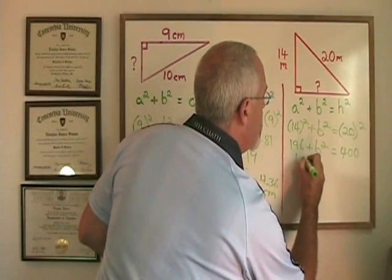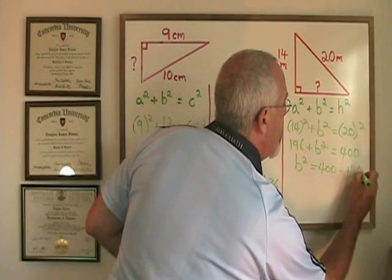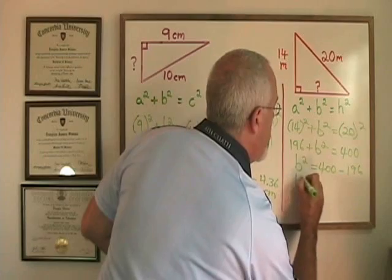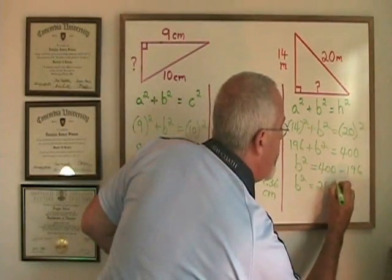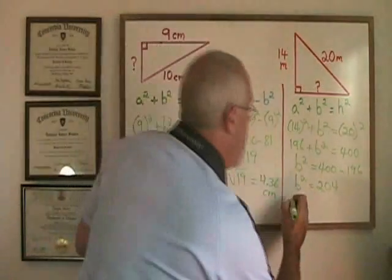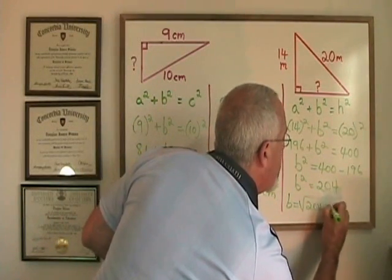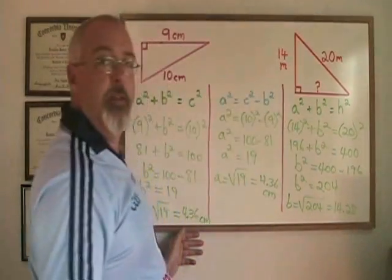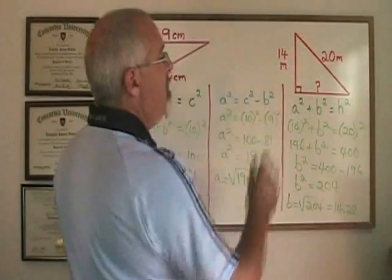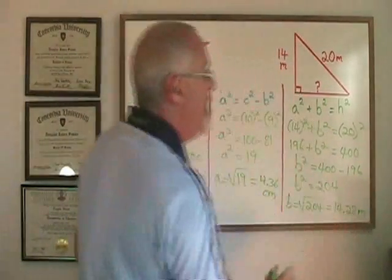So doing some algebra I get B squared is equal to 400 minus 196, which is 204. B therefore will be equal to the square root of 204, which is 14.28 if I round to the nearest hundredth. And because the unit of measure was meters, we have found a side length of 14.28 meters in this case.